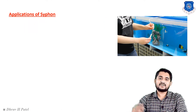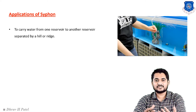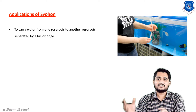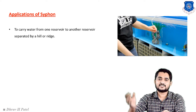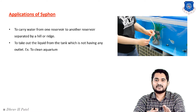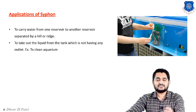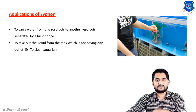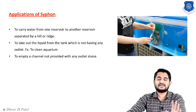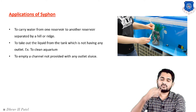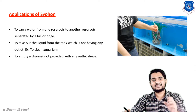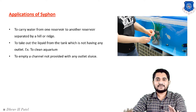The main applications of the siphon are: first, to carry water from one reservoir to another reservoir separated by a hilly region; second, to take out liquid from a tank which does not have any outlet — for example, an aquarium at home with no outlet, where water can be transferred outside for cleaning purposes using a simple siphon; and third, to empty a channel that is not provided with any outlet, transferring water without any pump or electricity.